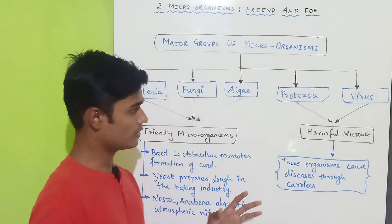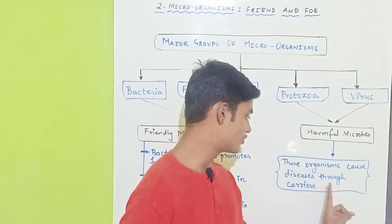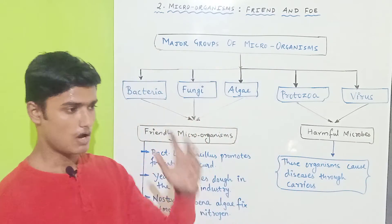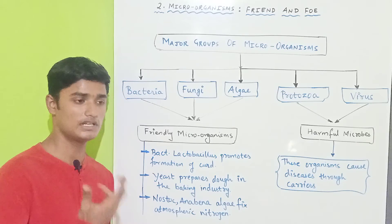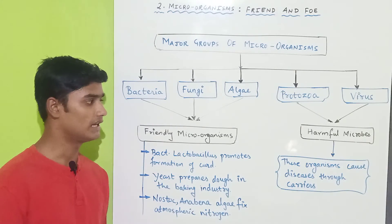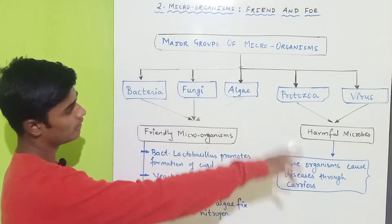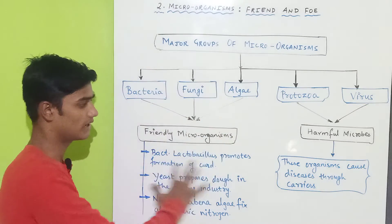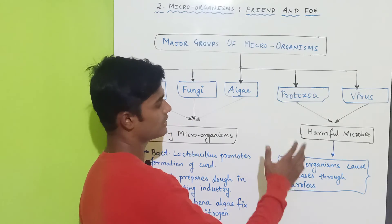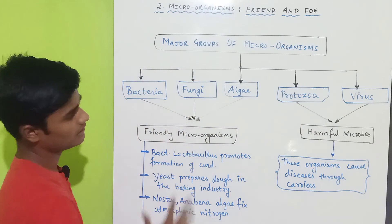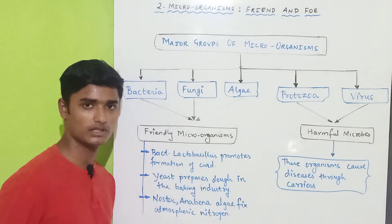Now let's look at harmful microbes. These organisms cause diseases through carriers, and we will read about how they cause diseases in the next lecture. Till then, just remember the skeletal view: some bacteria, fungi, and algae are friendly organisms, while protozoa and viruses come under harmful microbes. We will discuss everything in detail in the next lecture — thank you so much.